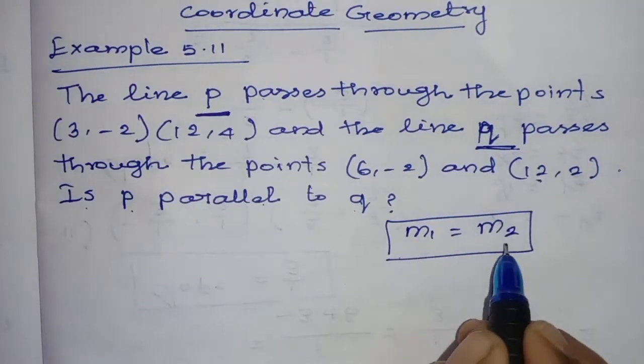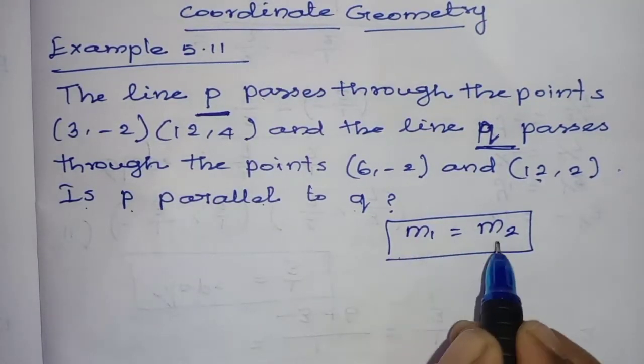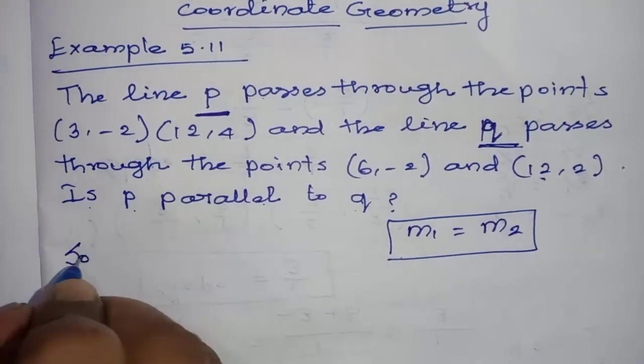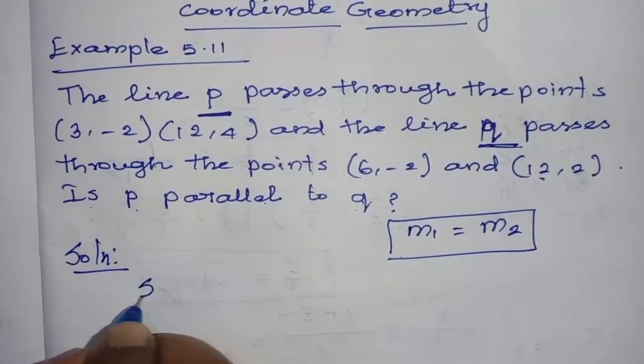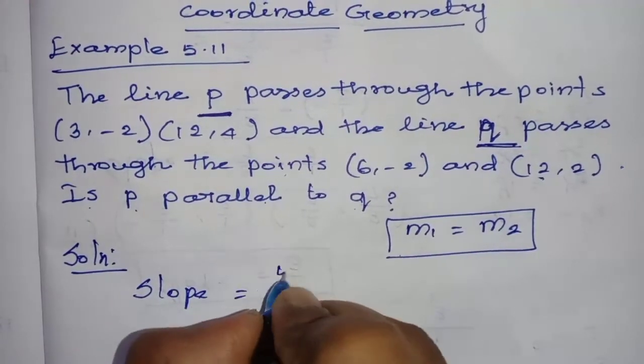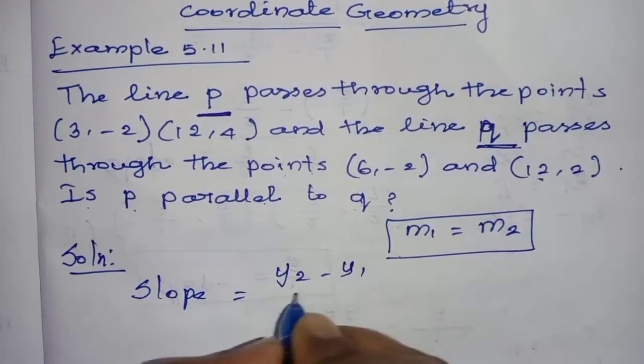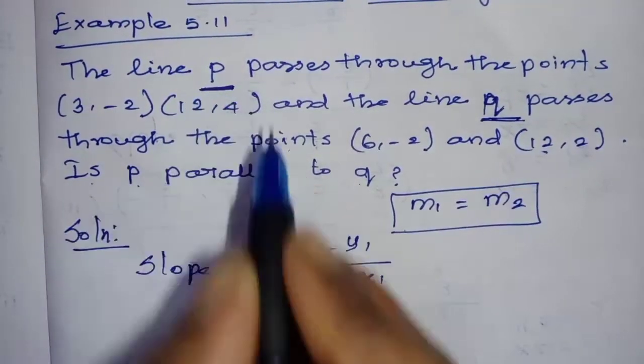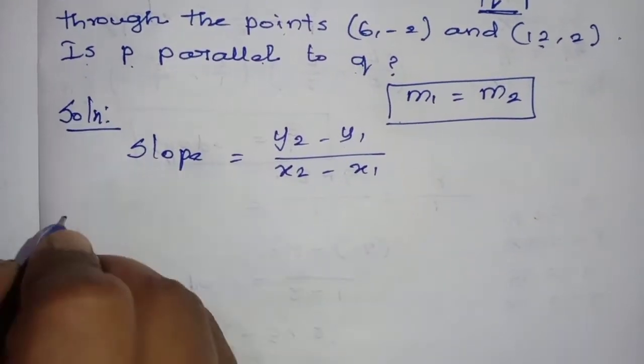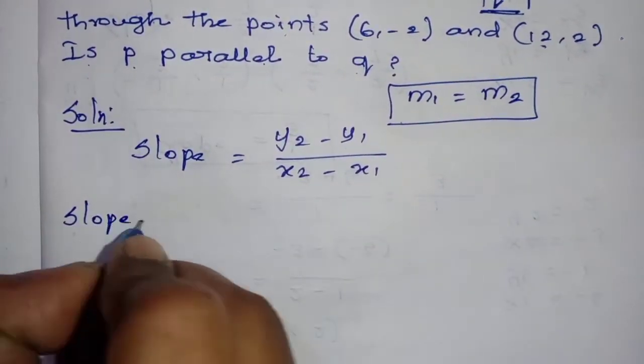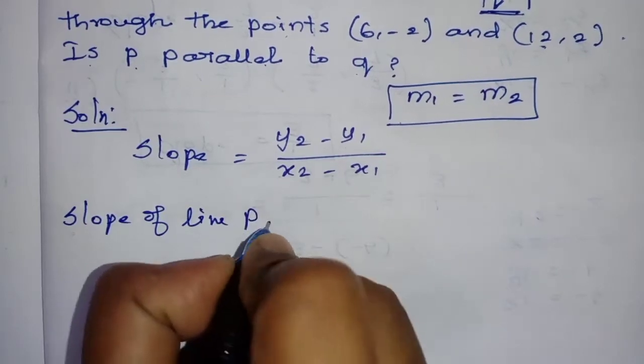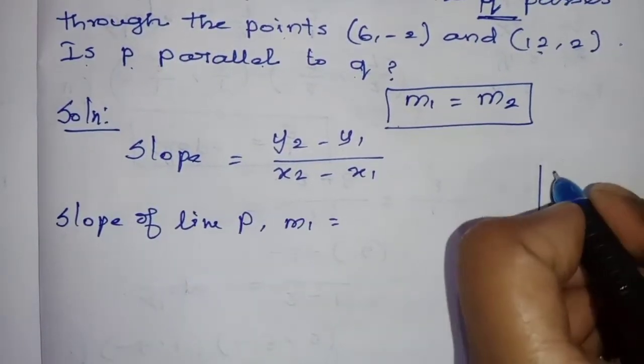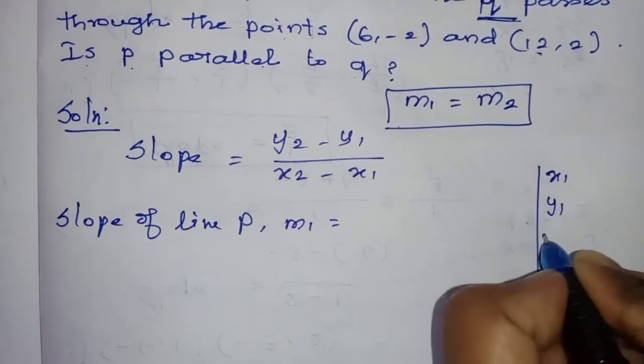So first solution. Slope formula: y2 minus y1 by x2 minus x1. First, find the slope of line P. So slope of line P, that is M1.